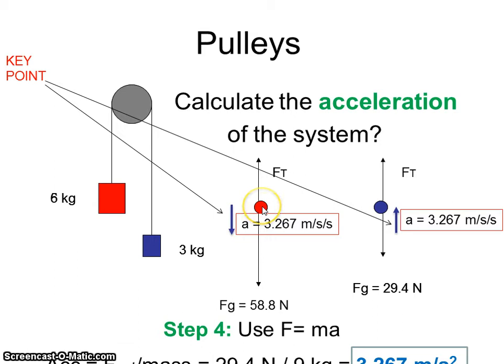The red guy has an acceleration of 3.267. The blue guy has an acceleration of 3.267. But they're accelerating in opposite directions. That's why we put that this is a key point. Put the arrow in which direction they're accelerating. If you don't, it's going to be more confusing to calculate the tension force. The lighter guy goes up. Heavier guy goes down.